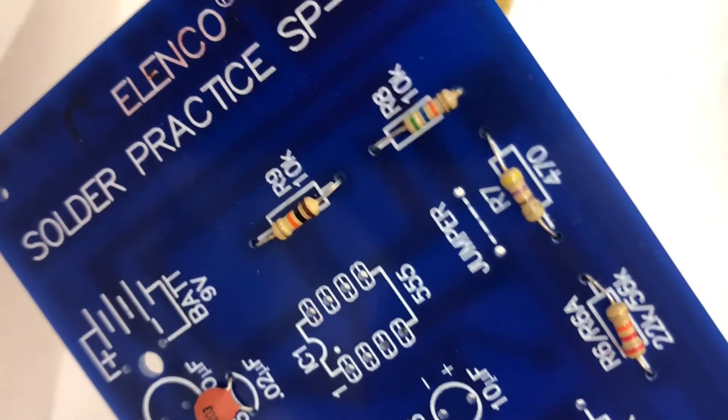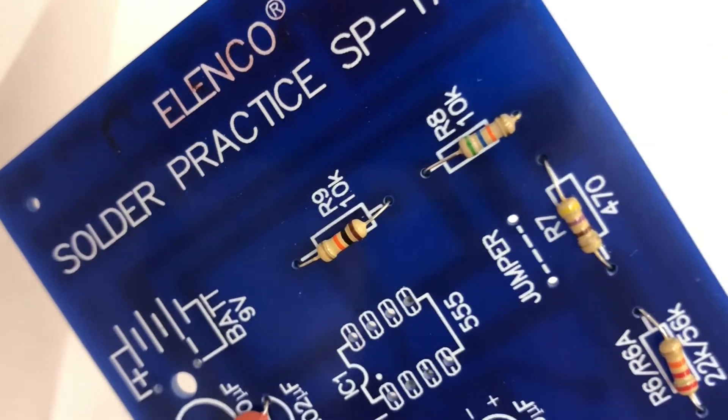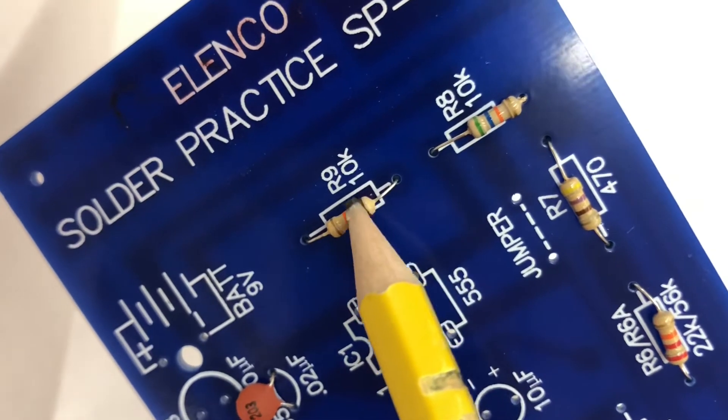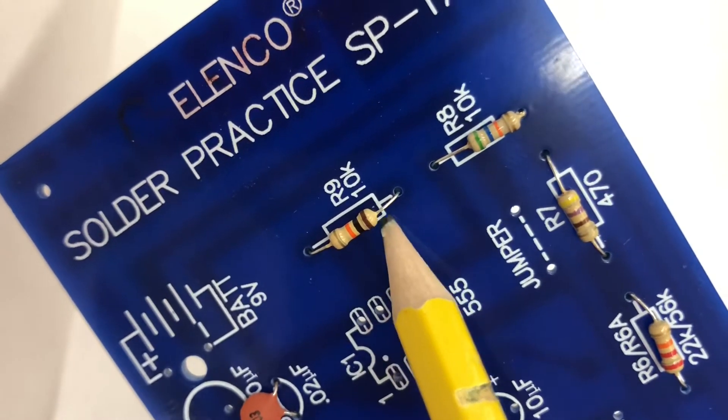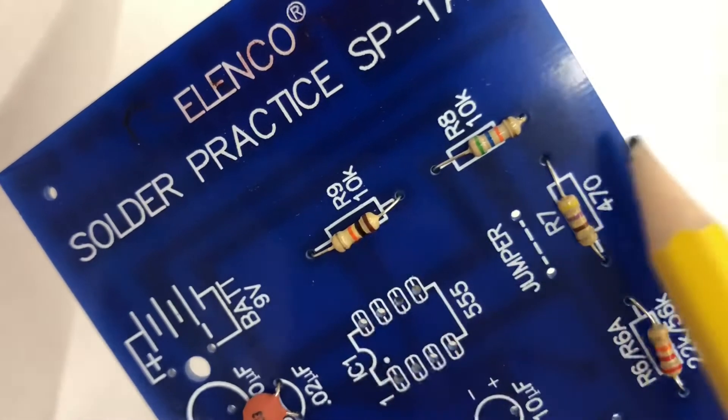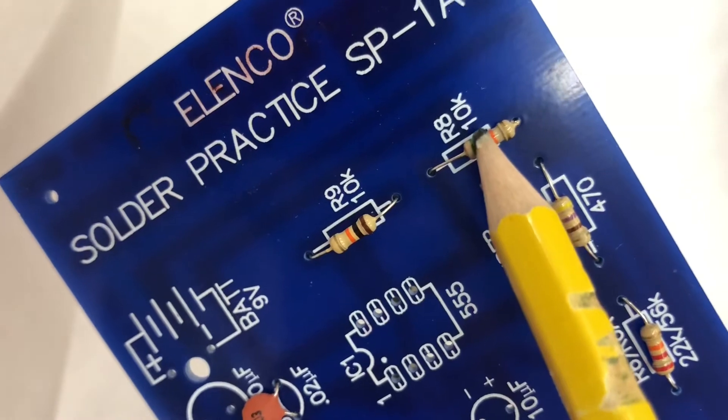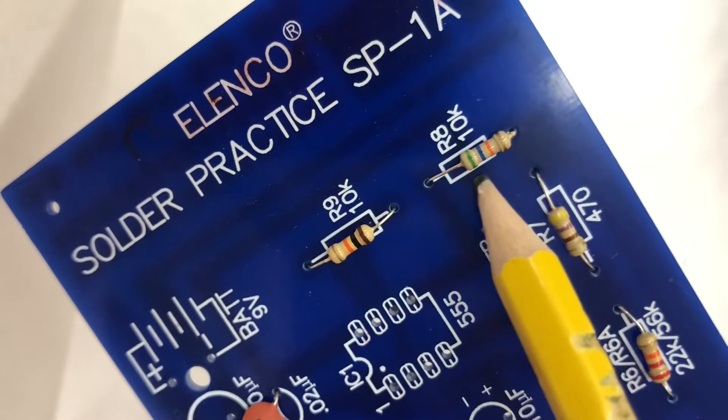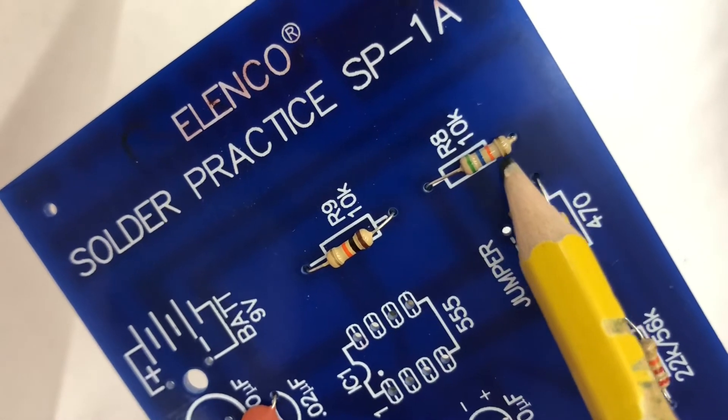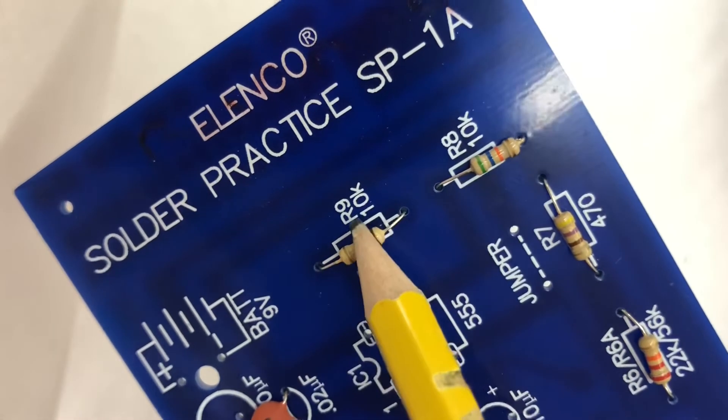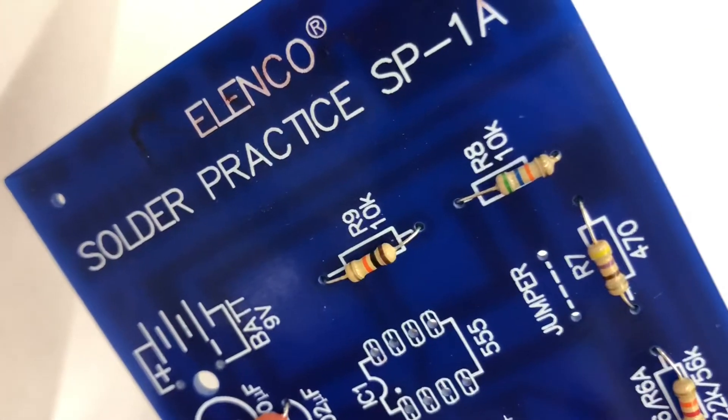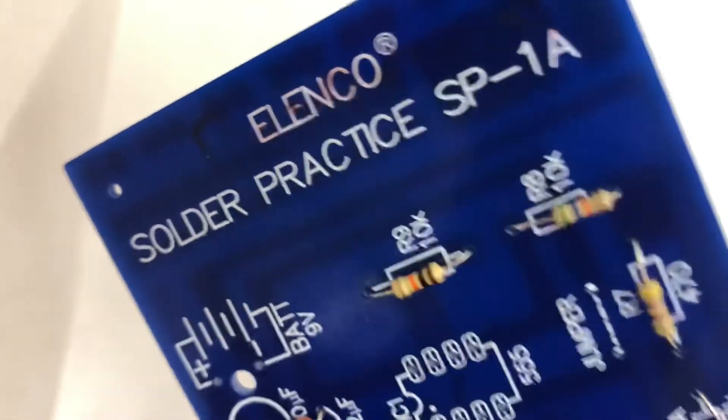All right, so here's an example of what sometimes happens. If you notice, 10k is right here - we have our brown black, so it's 10 plus 0 times 1,000, that's 10,000. You look over here, this one says 10k R8, but if you look here it has green blue orange, so this one is not the same as 10k. This one is different numbers, so we need to take that out.